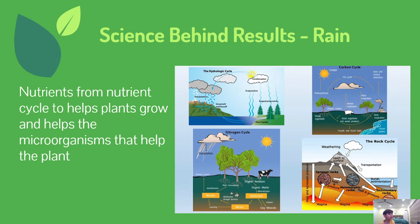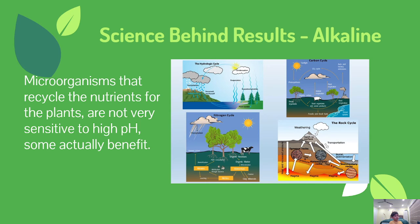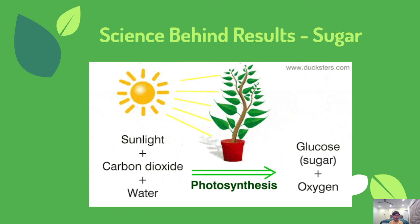The science behind the results: rain was the most effective because it had minerals and nutrients carried by the nutrient cycle, which helped the plant and the microorganisms that helped it grow. For alkaline water, the microorganisms that help the plant are broadly sensitive to the higher pH, but some actually benefit, so it did not affect plant growth that much. For sugar water, plants don't need sugar for photosynthesis, so it was just reducing how much water the plant actually received, causing the plant to grow less.